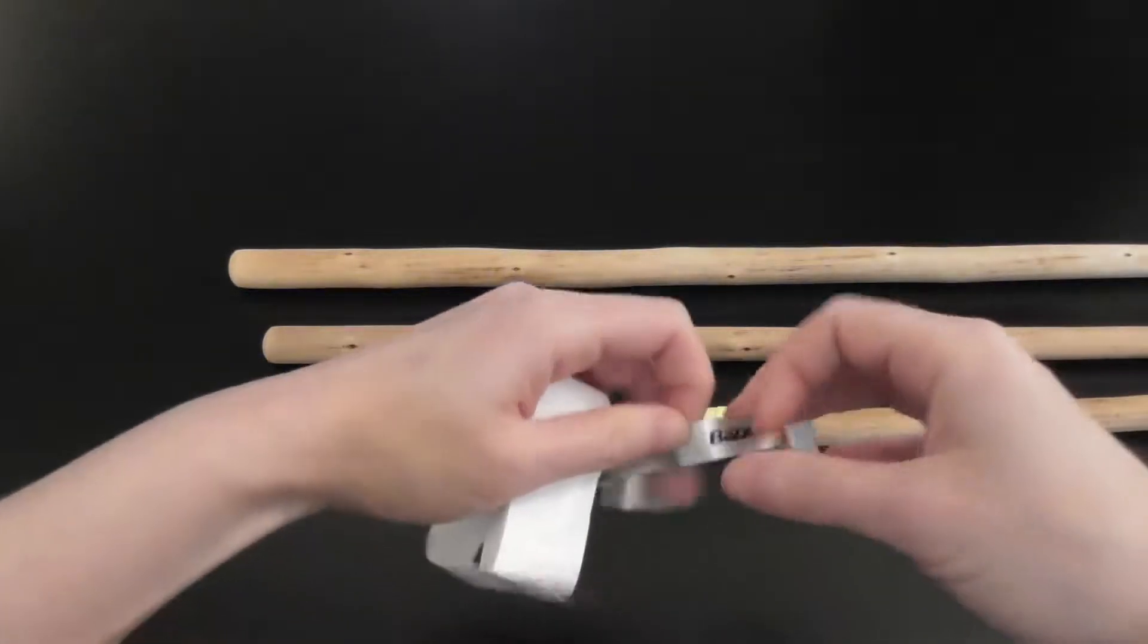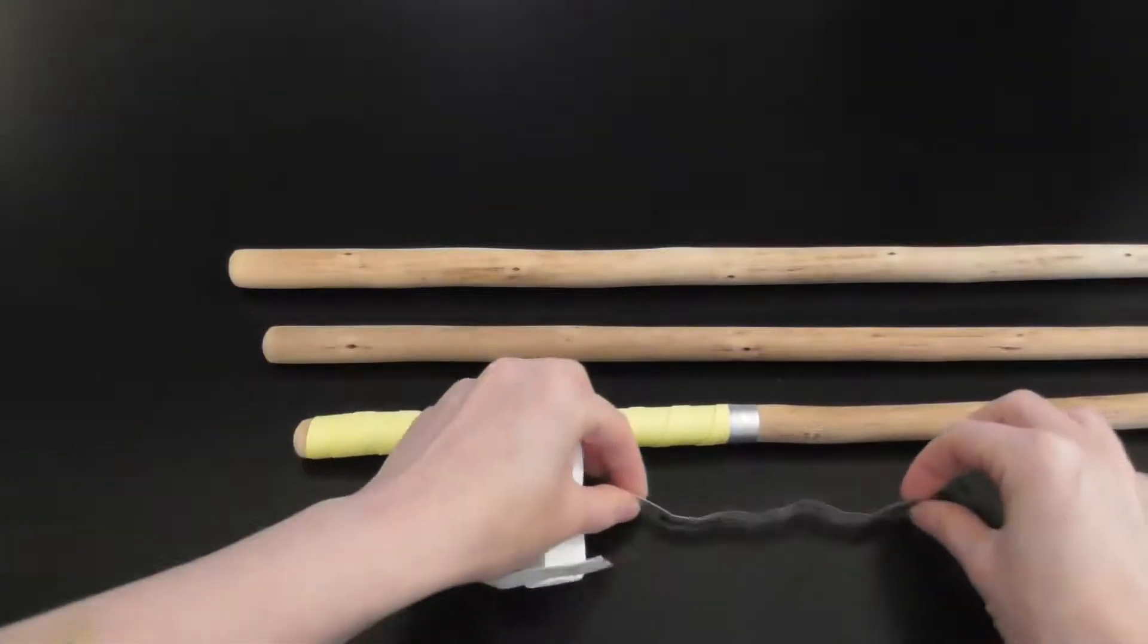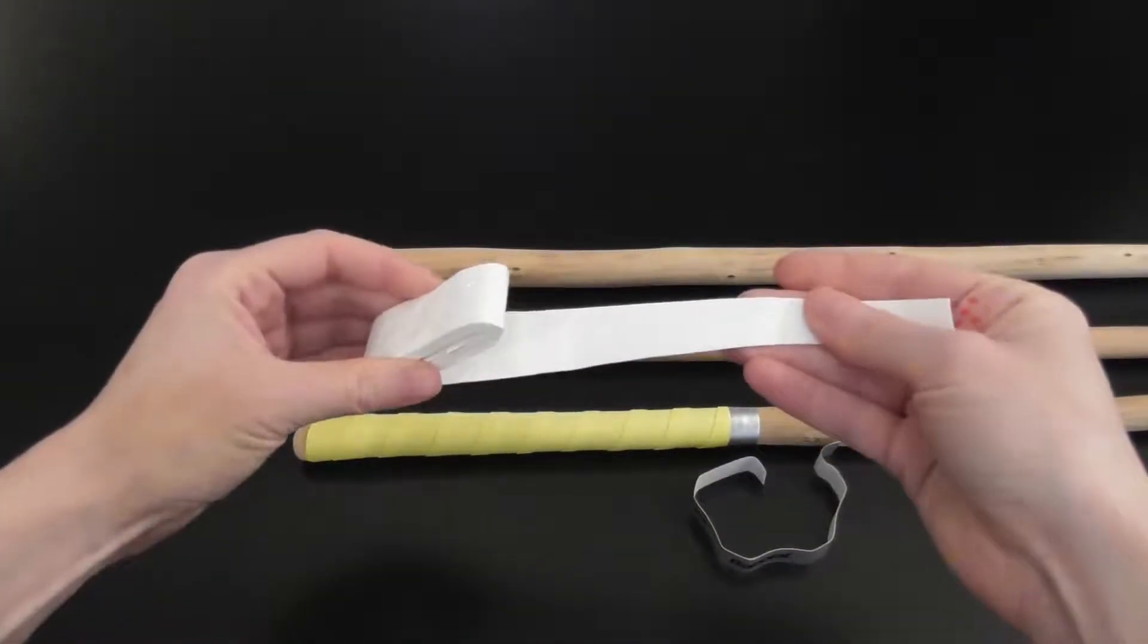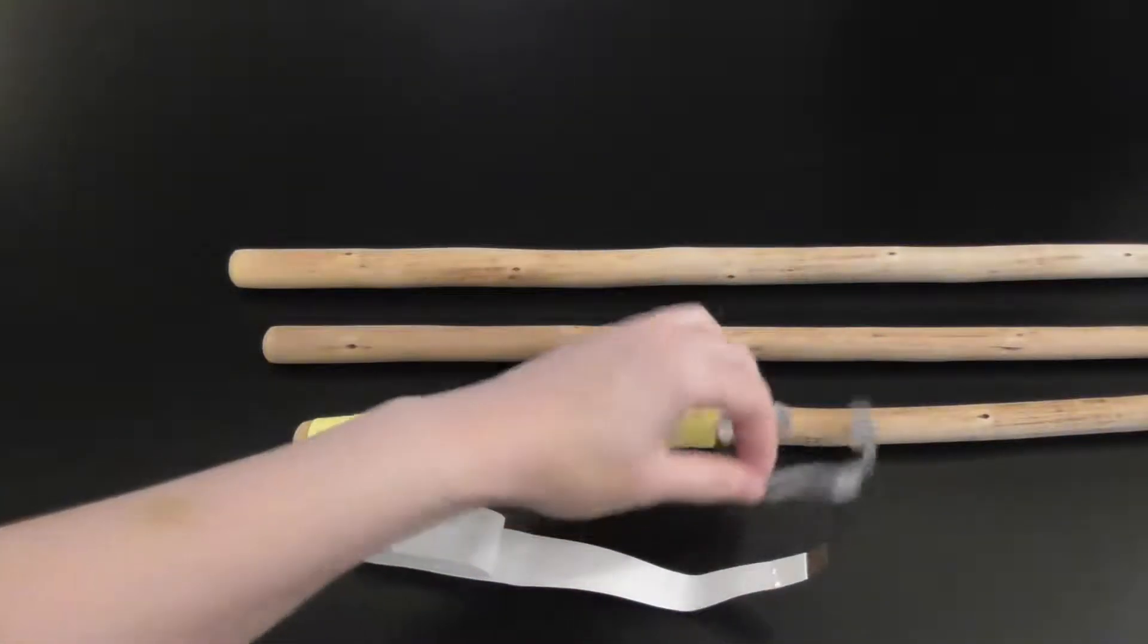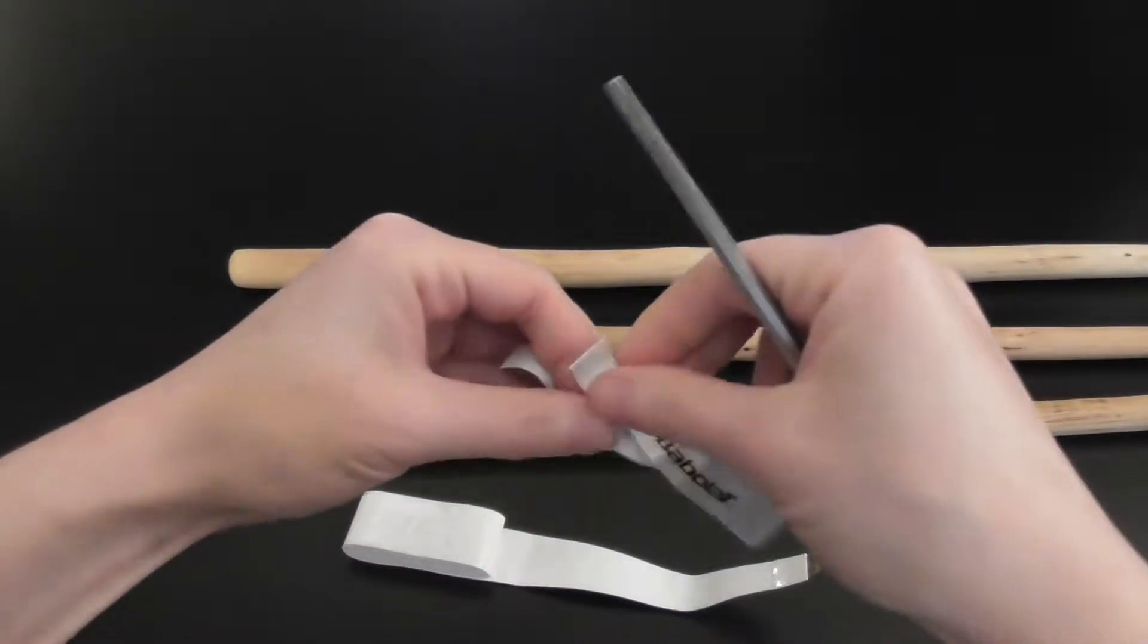The tape usually comes with an adhesive strip and the tape itself. The first thing I do is to cut the adhesive strip in two.